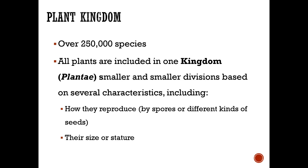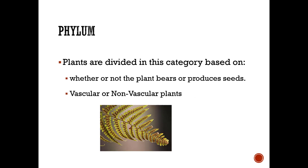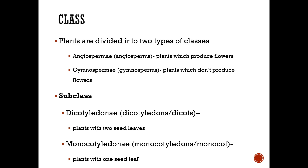In the plant kingdom there are over 250,000 species included in kingdom Plantae, with progressively smaller divisions based on characteristics such as whether they reproduce by spores or seeds and what size they are. At the phylum level, plants are divided based on whether they produce seeds and whether they're vascular or non-vascular. At the class level, plants are divided into angiosperms, which produce flowers, and gymnosperms, which do not — think pine trees.